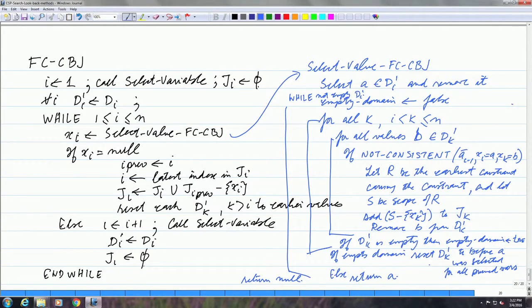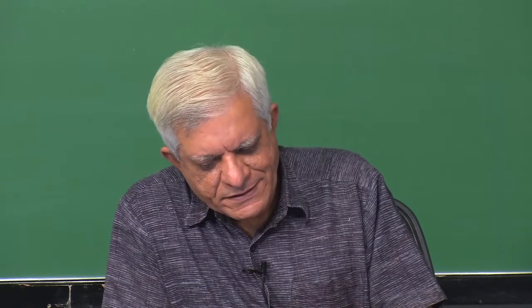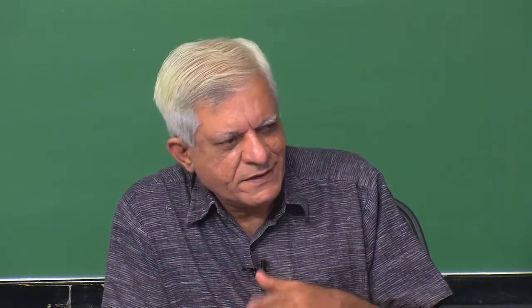The differences from conflict directed back jumping are: first, you are doing look-ahead, pruning future variables, and at any point if any future variable becomes empty, you know you cannot select the value for a. Second, when you are pruning values for future variables, you add to the jump back set for that variable - for every value of a future variable that is being deleted, you add some variables to its jump back set. Third, we are selecting the variable that we want to select next.